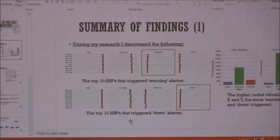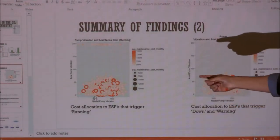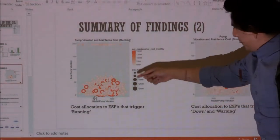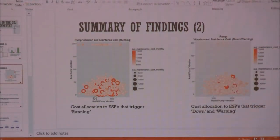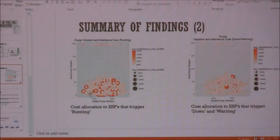Here are some other charts I made. Looking at cost per year for running ESPs, you can already question whether big investments are being made on pumps that are already running. Maybe we should reallocate that money to the ones triggering down and warning. There's already about $77,000 to $100,000 being invested on those triggering down and warning. I generated this chart using R with ggplot to satisfy my professor.